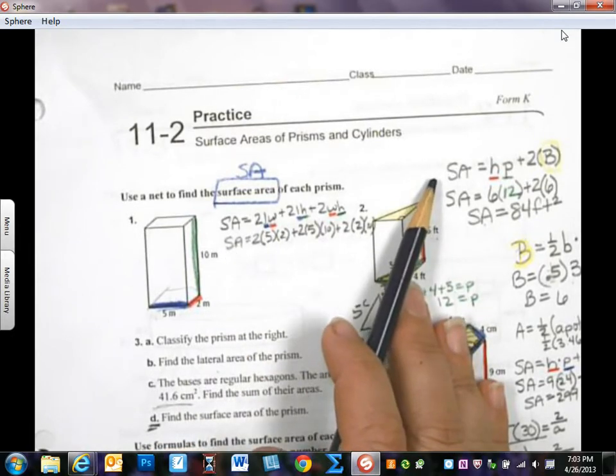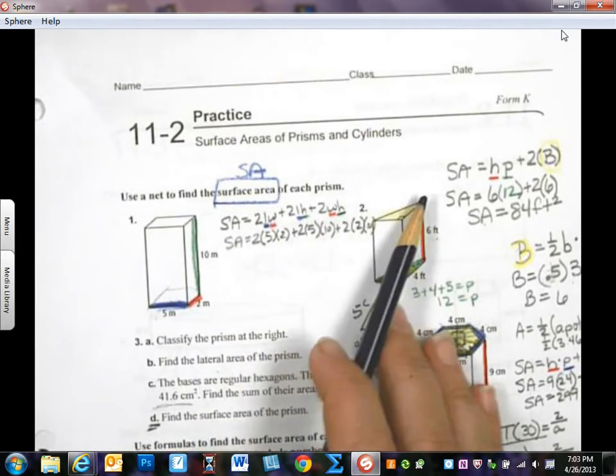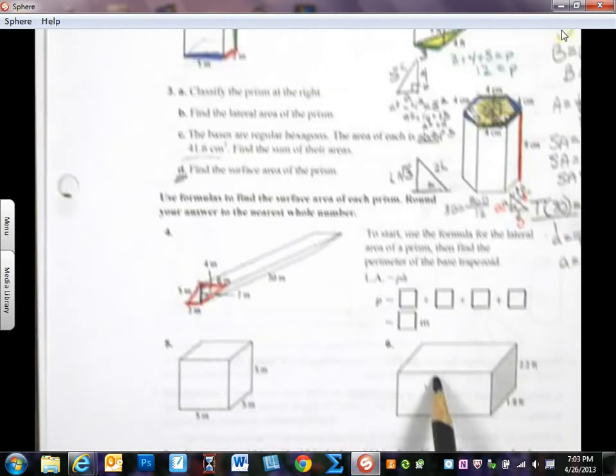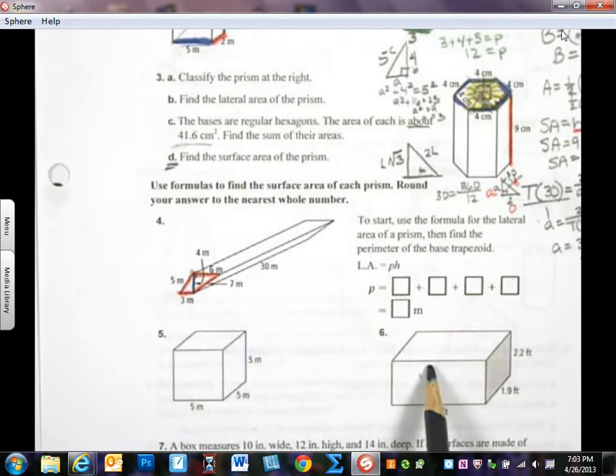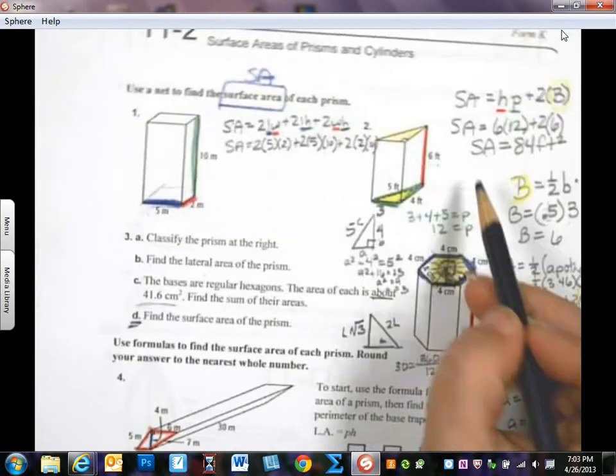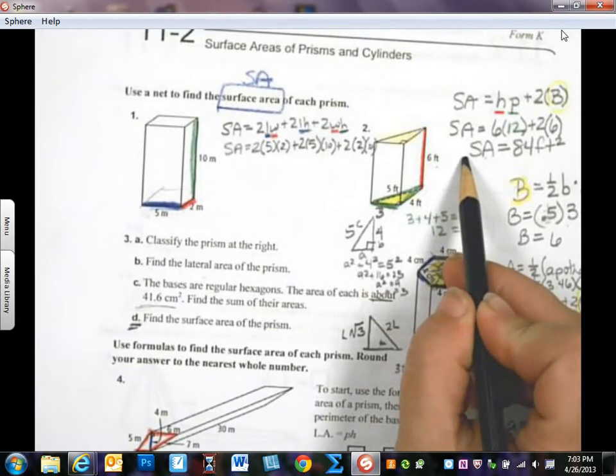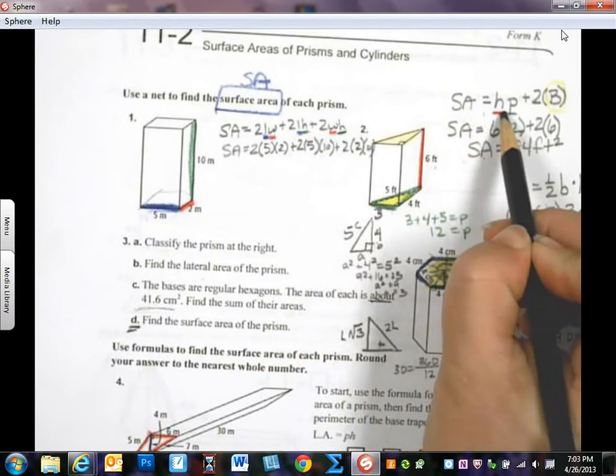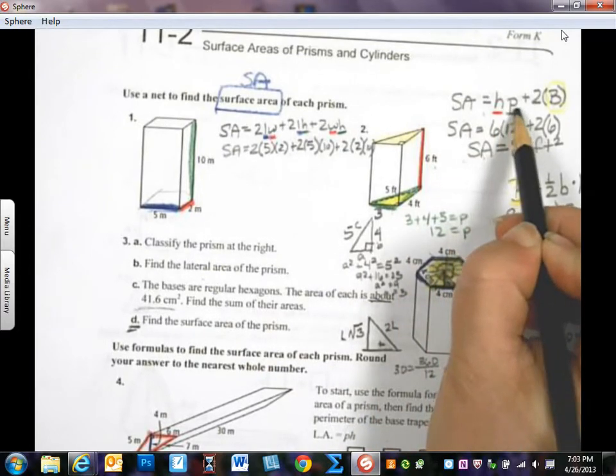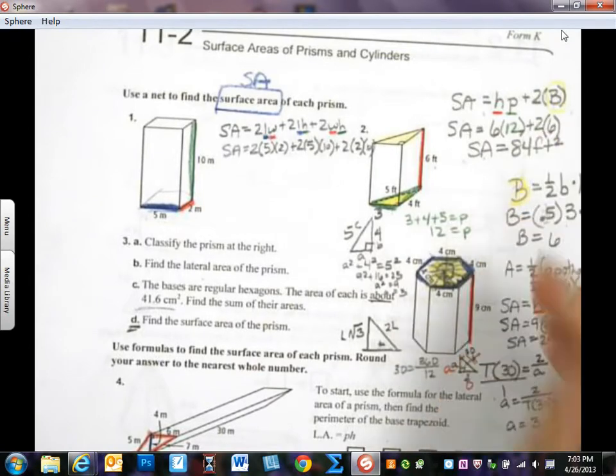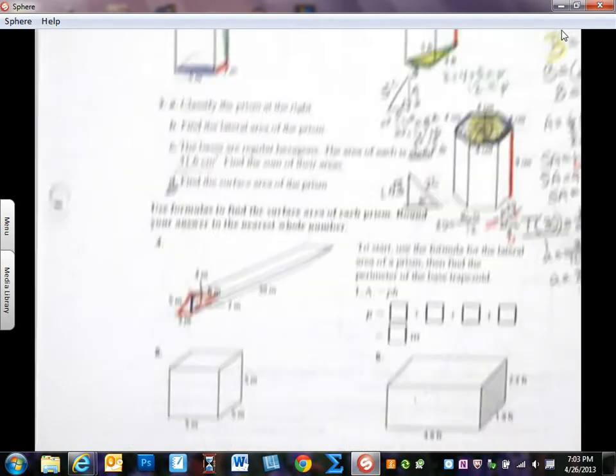And they're both on the formula sheet. You're going to get the same answer on these two, regardless of which of the two formulas you choose. But if you have a problem like this, where the base is not a parallelogram, you must use that formula right here. SA, the surface area, equals the height times the perimeter, plus 2B. 2, and notice that's a capital B. Remember, the capital B is the area of the base.